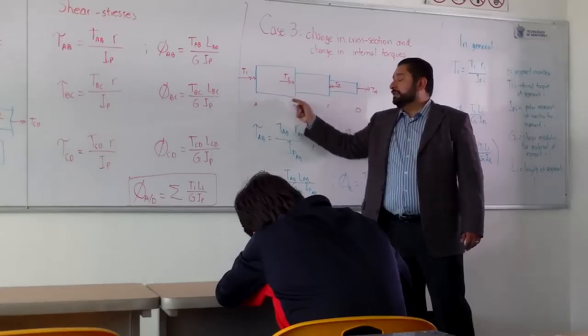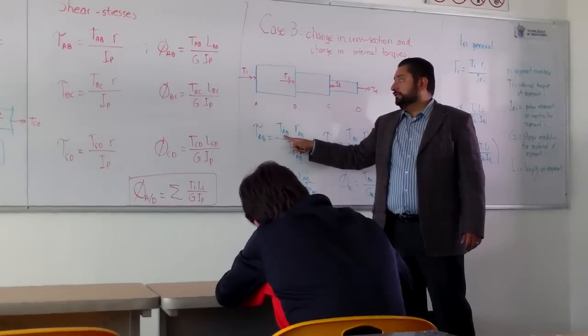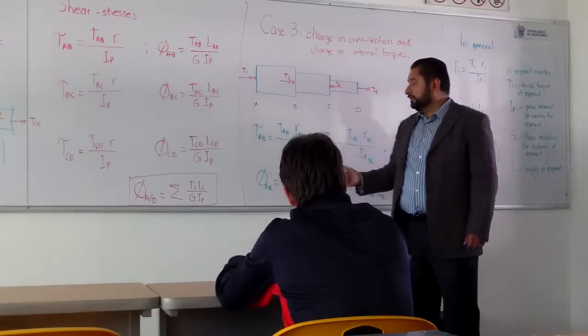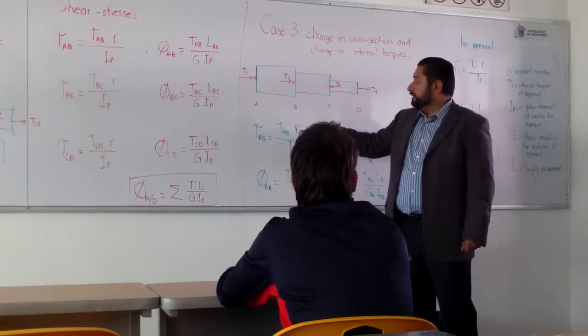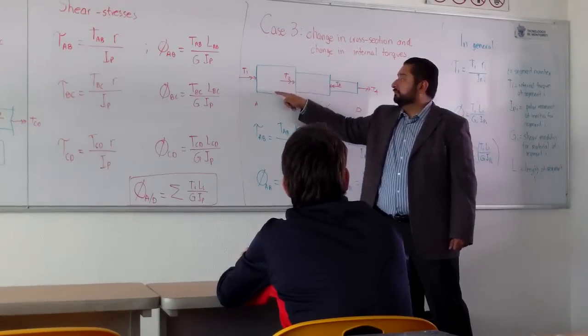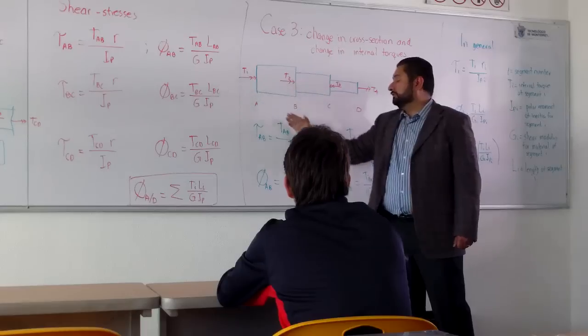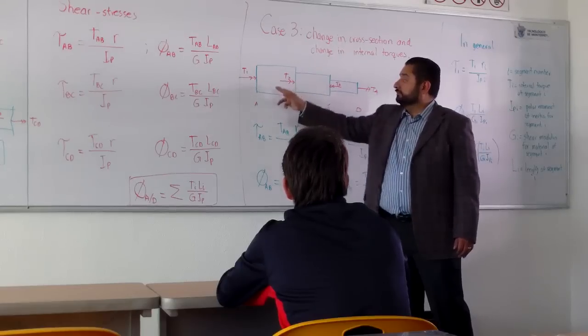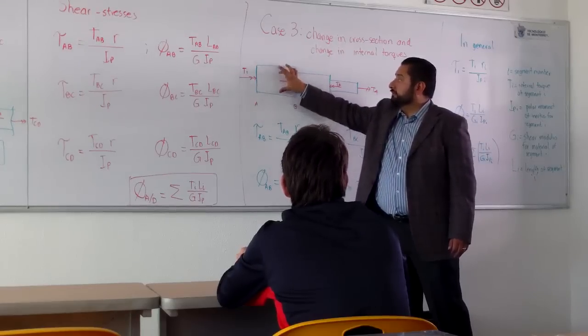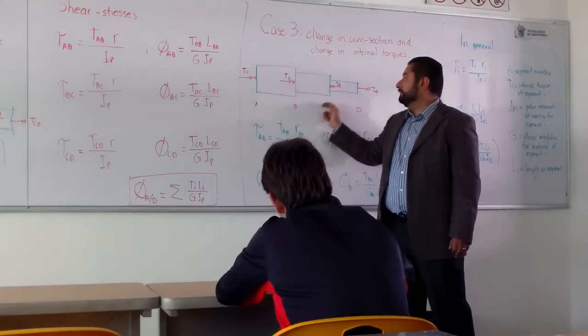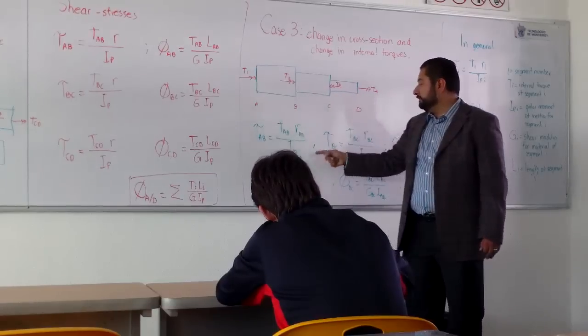For instance, for segment AB, we need to find the internal torque AB with the procedure of sections that we just discussed. We need to have the radius in this section and it's different, the radius for each of the sections of the bar. And also, the polar moment of inertia is going to change from AB to BC and another one for CD. And these are the formulas.